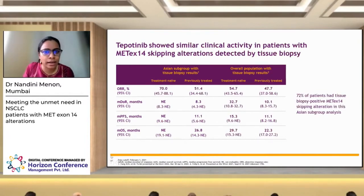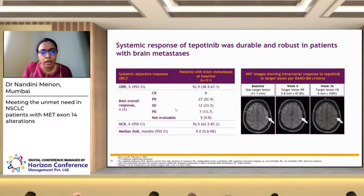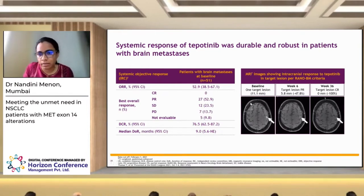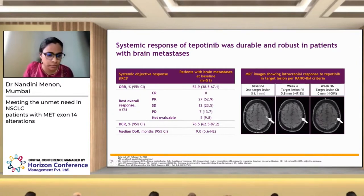Tepotinib showed clinical activity similarly in Asian and non-Asian patients. Regarding brain metastases: oncogenic driver mutation-positive patients have a higher incidence of brain metastasis, and more trials now allow inclusion of patients with brain mets. The systemic response of tepotinib in patients with brain mets was durable and robust. Images show a target brain lesion of 11.1 mm at baseline that reduced to 5.8 mm at six weeks and achieved a complete response at week 36, confirming intracranial activity.